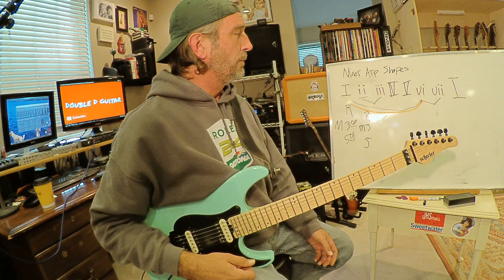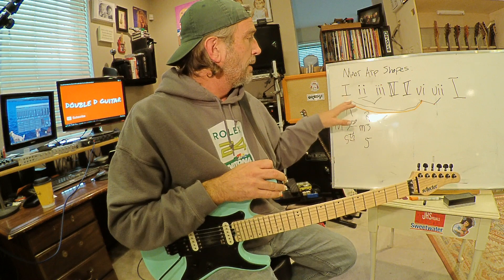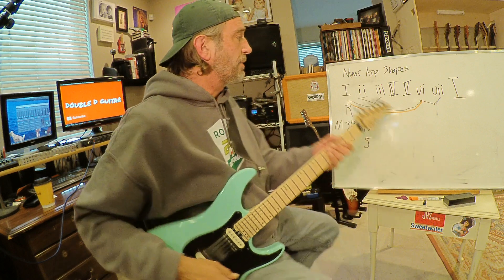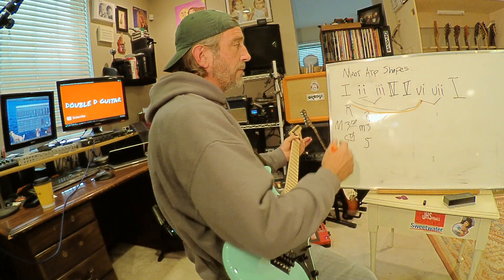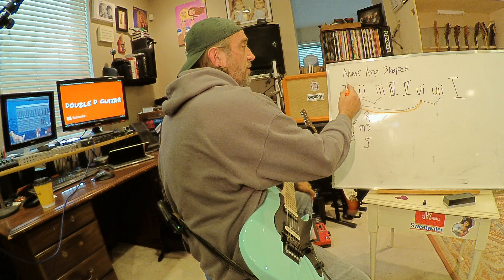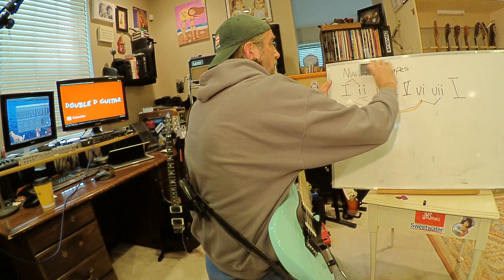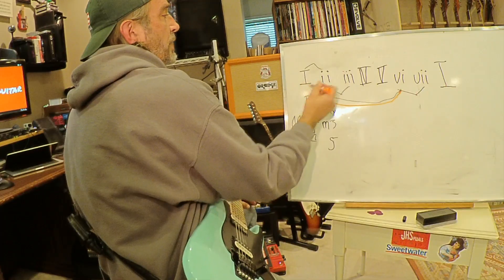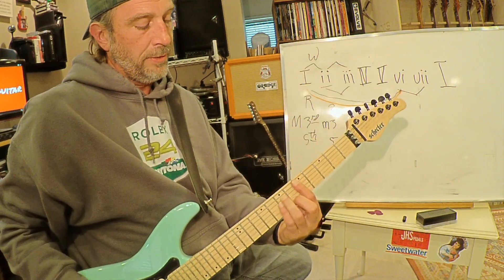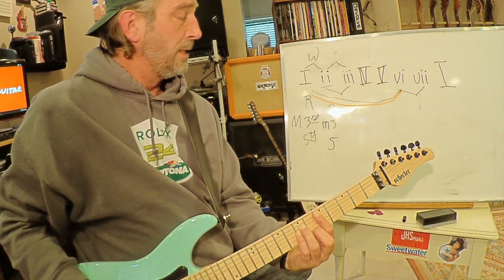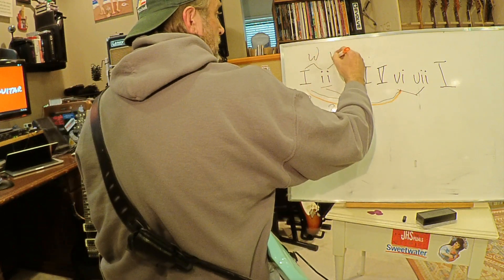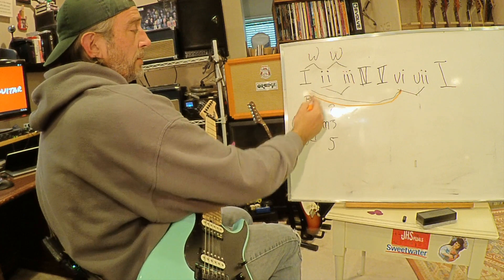Part of the thing about modal playing and modal jams and modal vamps is that you kind of don't always want to have that Ionian sound — you want to explore these options. We have gone over the names of all the modes before, so google it if you don't know them. This is a whole step. C to D is that first whole step. D minor — and what it's telling us — the next minor chord would be E minor. That's a whole step as well.